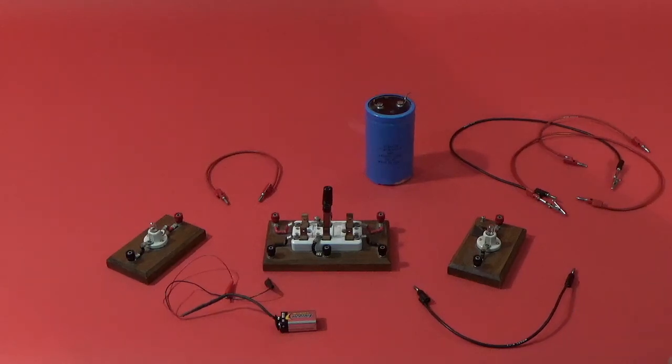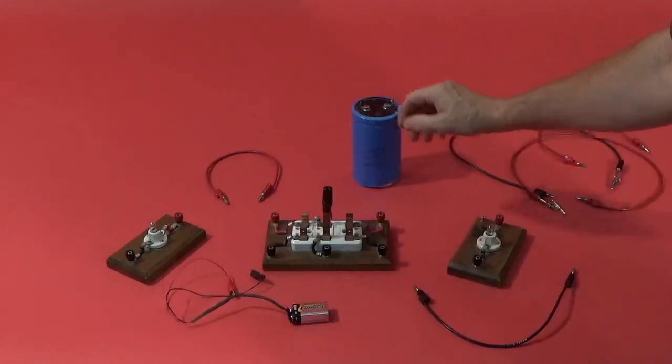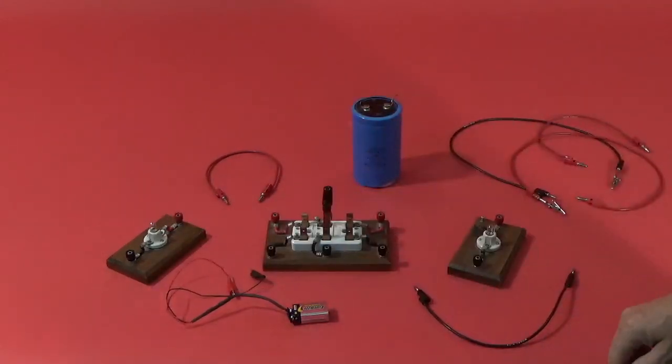All right, we have a very simple circuit here. We have a capacitor right here and a battery source, a 9 volt battery, and a couple of light bulbs will stand in as a resistor.